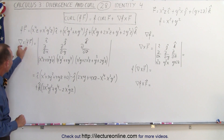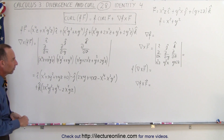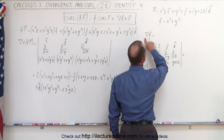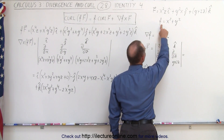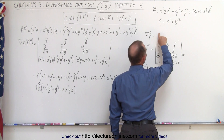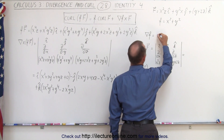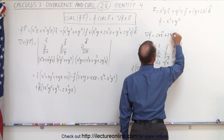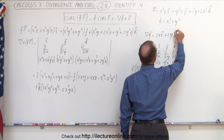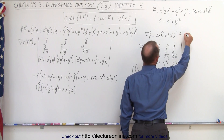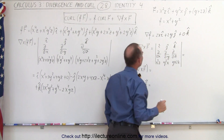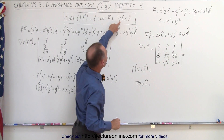That is the curl of the product of those two functions. Now we move to the right side. First, we take the gradient of the scalar function: the partial with respect to X gives 2X in the I direction, the partial with respect to Y gives 2Y in the J direction, and the partial with respect to Z gives 0K.